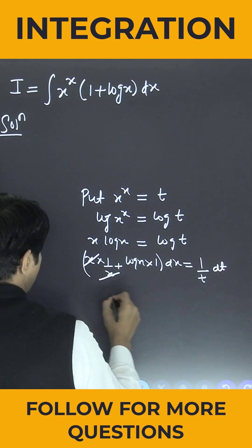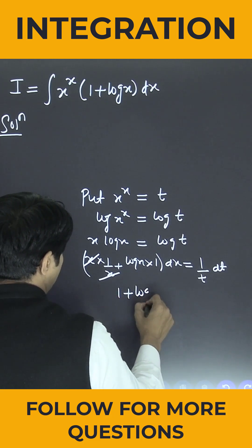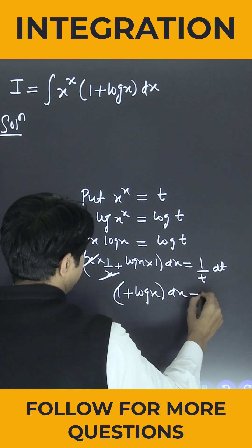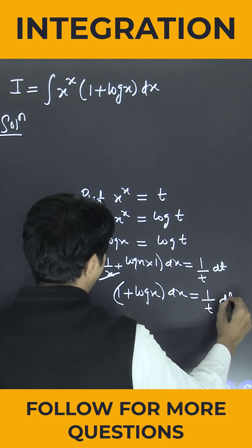So this is cancel out, so we are left with 1 plus log x into dx is equal to 1 by t into dt.